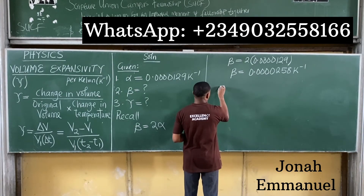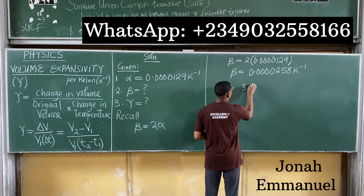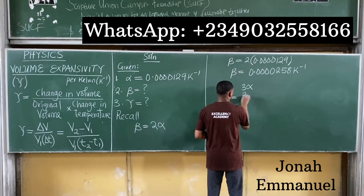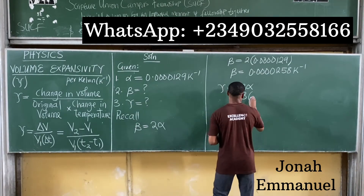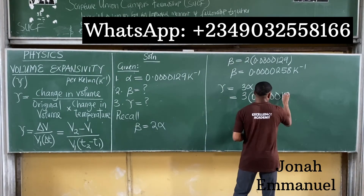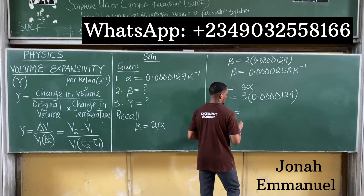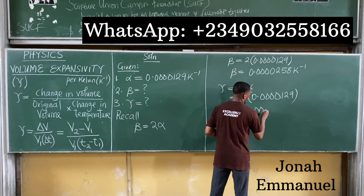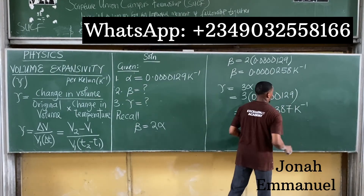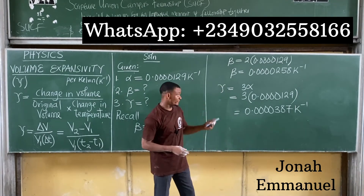Next, for volume or cubic expansivity γ: γ equals 3 times linear expansivity α. So γ equals 3 × 0.0000129, which gives approximately 0.0000387 per Kelvin. These are the values for area expansivity and volume expansivity.